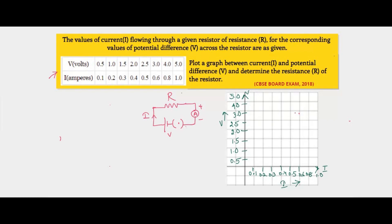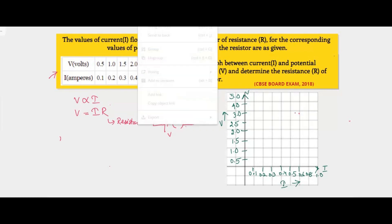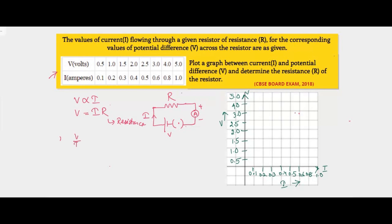We'll solve this using Ohm's Law: V is directly proportional to I at a particular temperature. That is, if the temperature remains constant, voltage and current vary directly. If there is an increase in voltage, there will be an increase in current. So V equals IR, where R is the constant of proportionality, known as the resistance of the resistor. Therefore, V divided by I is always a constant value R.